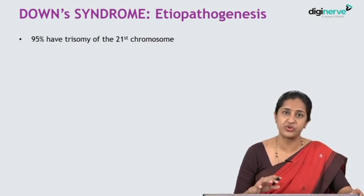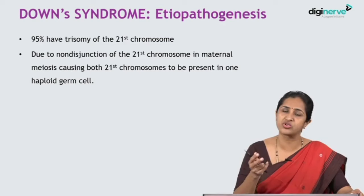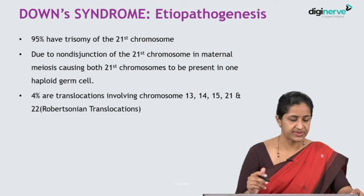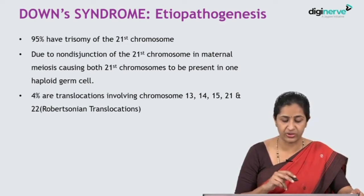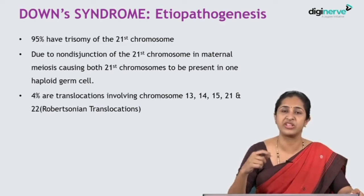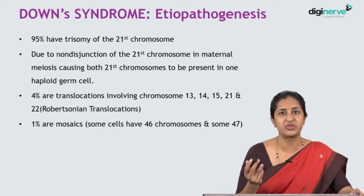The etiopathogenesis of Down syndrome: Out of 100% of children with Down syndrome, 95% have trisomy of the 21st chromosome — meaning 3 copies of the 21st chromosome instead of the normal 2. This occurs due to non-disjunction of the 21st chromosome in maternal meiosis, causing both 21st chromosomes to enter one haploid germ cell while the other germ cell has no 21st chromosome and becomes non-viable. Four percent are due to Robertsonian translocations involving chromosomes 13, 14, 15, 21, and 22, wherein part of chromosome 21 is attached to another chromosome.